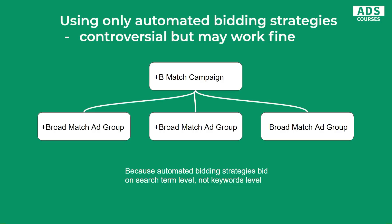Another structure can be used for automated bidding campaigns. When you use Target ROAS or CPA, this can work really well. This structure may be controversial, but here you use only broad match keywords, with and without modification. Why does this work for automated bidding strategies? Because automated bidding strategies bid at the search term level, not the keyword level. With manual bidding, you change bids at the keyword level. But with automated bidding, the system modifies bids at the search term level — so it doesn't really matter whether you have exact match keywords separately or only broad match keywords in your campaigns.